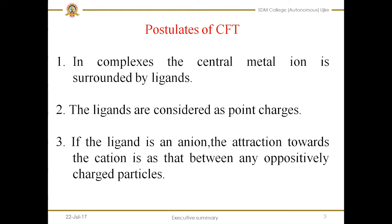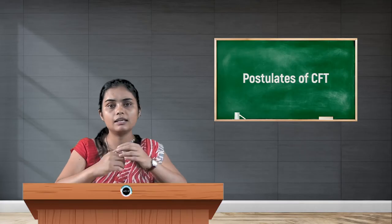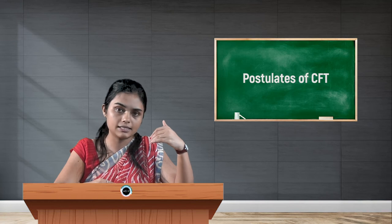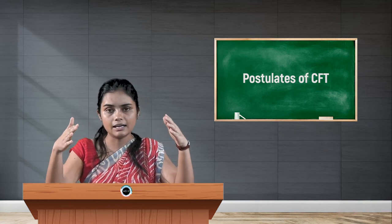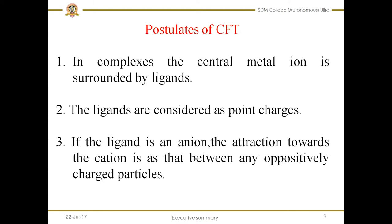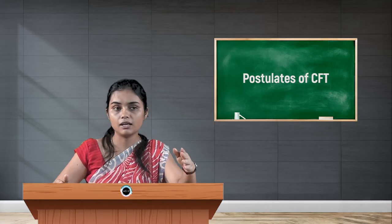The third postulate says that if the ligand is an ion, the attraction towards the cation is like that between any oppositely charged particles. According to this theory, the interaction between the metal and ligand is due to electrostatic interaction — just how interaction takes place between a positive charge and a negative charge. The same interaction will be between the metal and the ligand. If the ligand is negatively charged, then the attraction towards the metal ion is like the interaction between a cation and an anion.